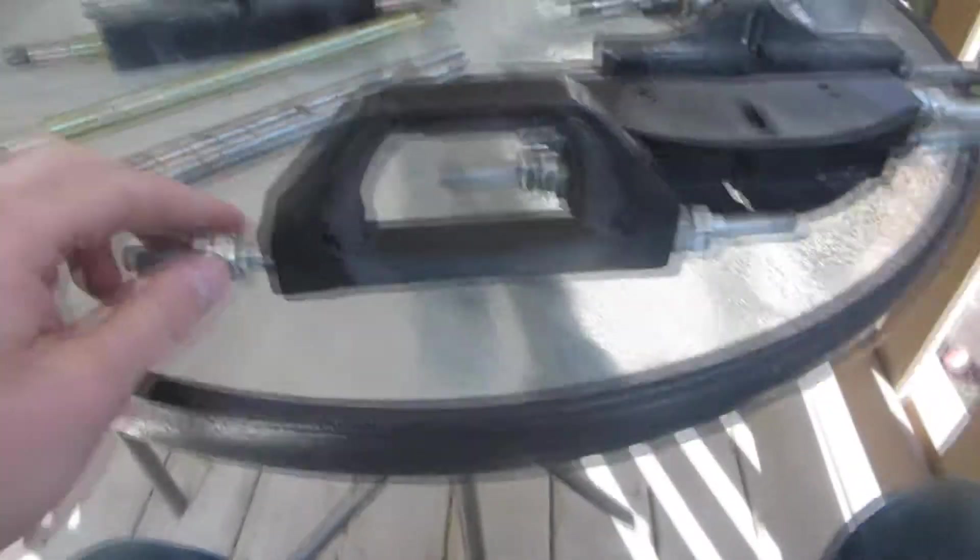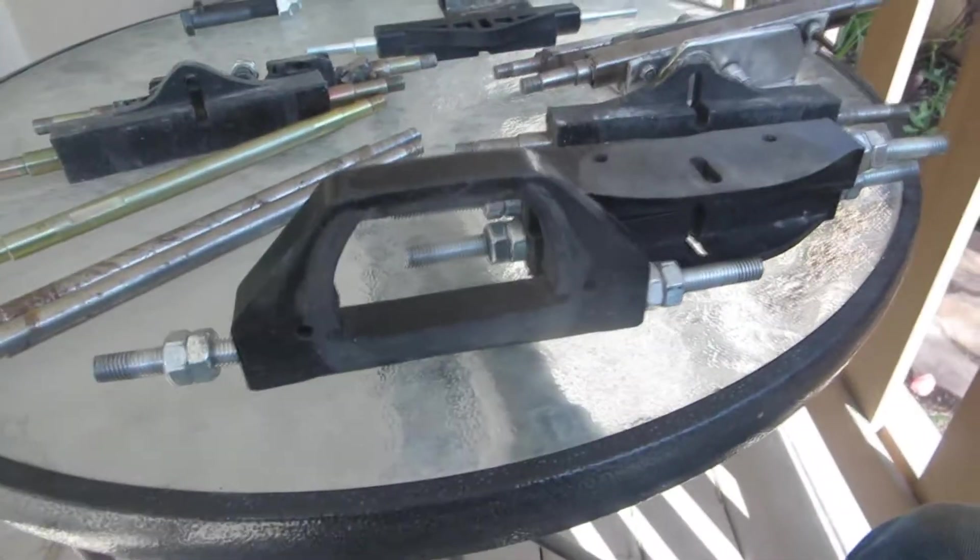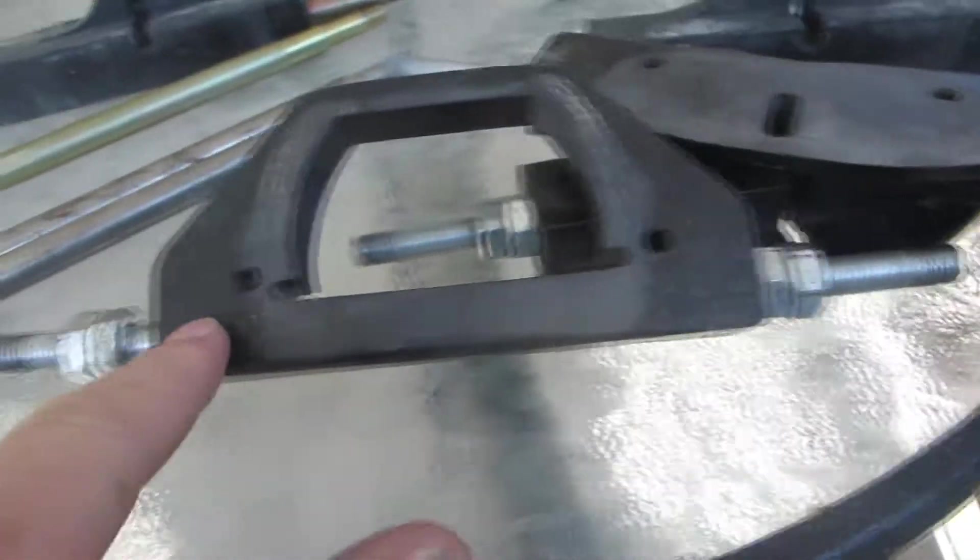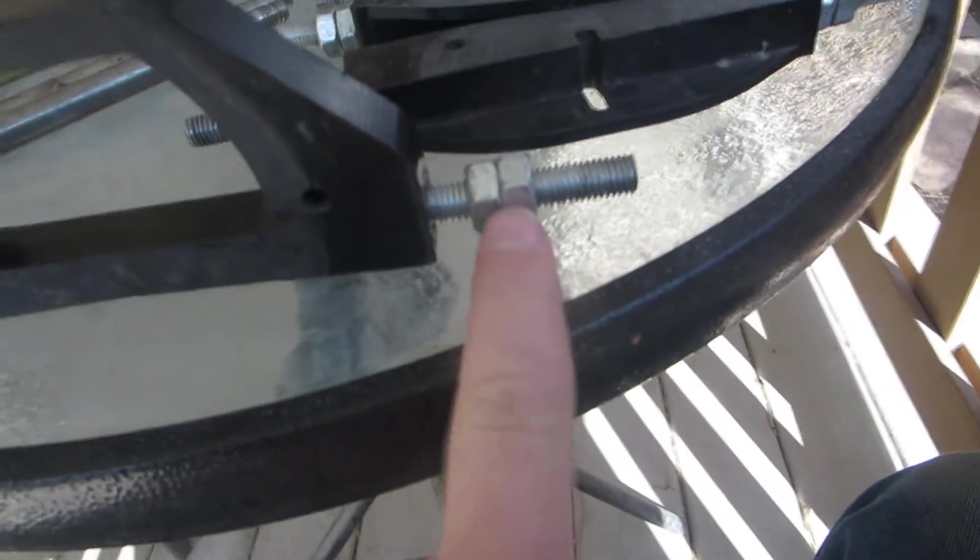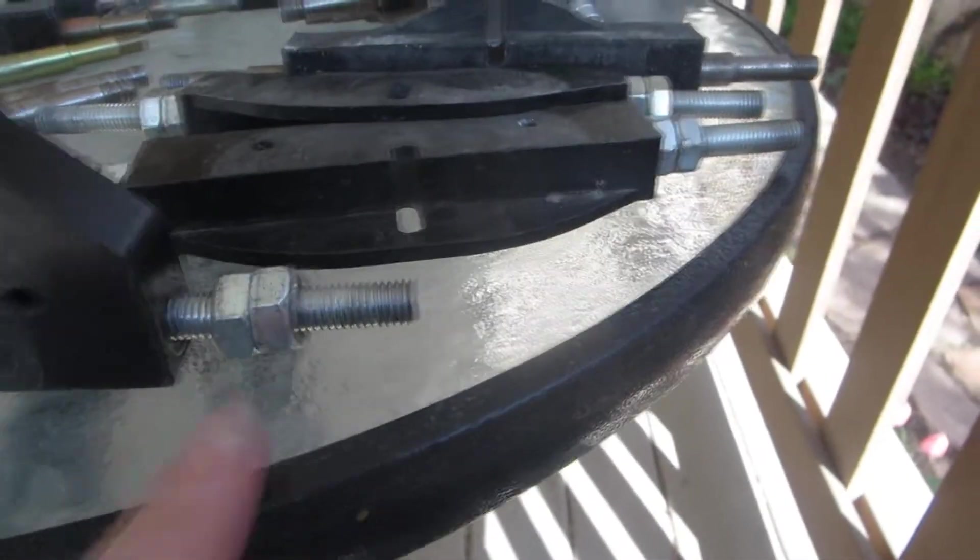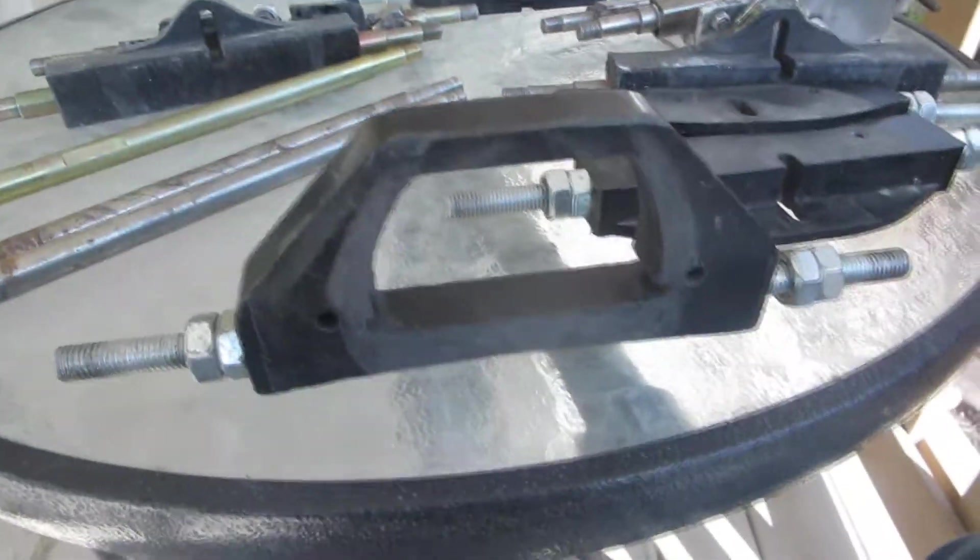For our early prototype axles what we actually just used was threaded rod. This plastic was bored out using a mill drill or a drill press would work. Put in a vise, drilled in from one side, flipped around, drilled in from the other side. And then you get a set of these nuts on there, you lock them together and you put a socket on it and you screw the whole thing into the plastic.